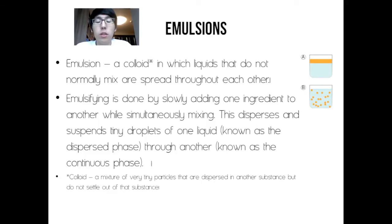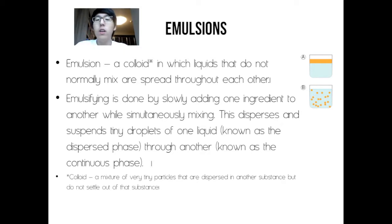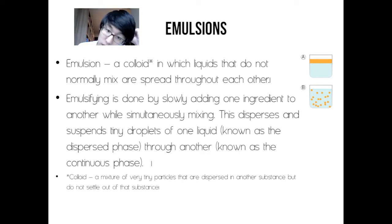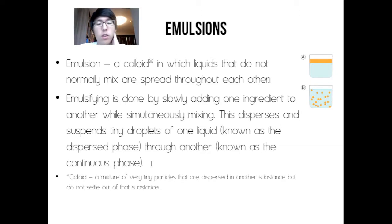Emulsions — a colloid in which liquids that do not normally mix are spread throughout each other. Emulsifying is done by slowly adding one ingredient to another while simultaneously mixing. This disperses and suspends tiny droplets of one liquid, known as the dispersed phase, through another, known as the continuous phase.